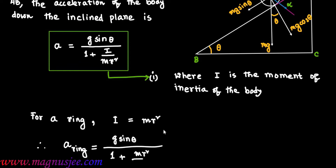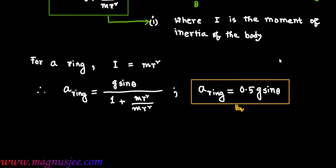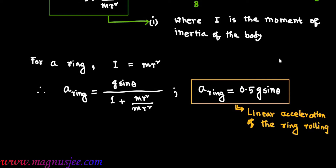For a ring, the moment of inertia I = MR². Therefore, the acceleration of the ring is: A_ring = g·sinθ / (1 + MR²/MR²) = 0.5·g·sinθ. This is the linear acceleration of the ring rolling down the incline plane.